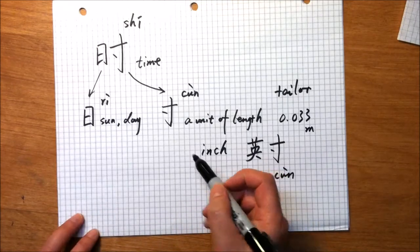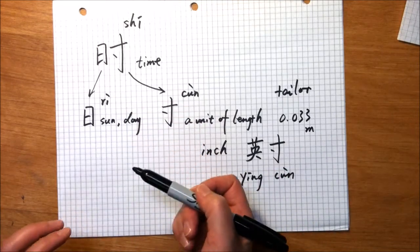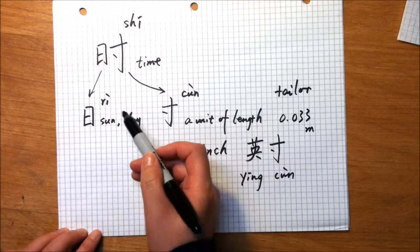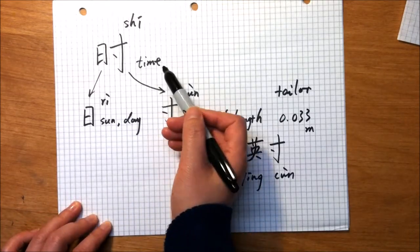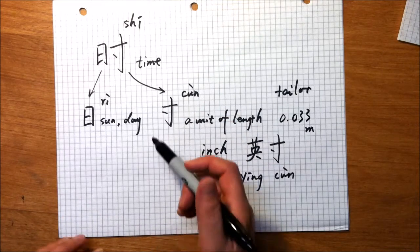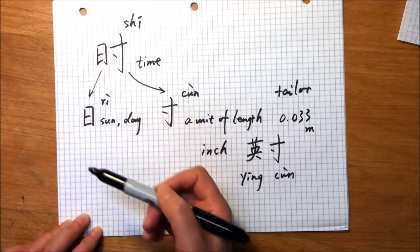So maybe we can understand that character shi as a measure of the movement of the sun or measure of the day. That is time. Hope this will help you remember how to recognize this character.